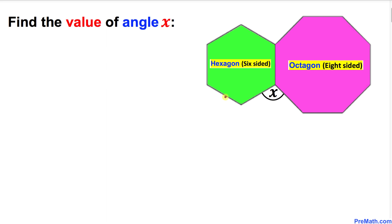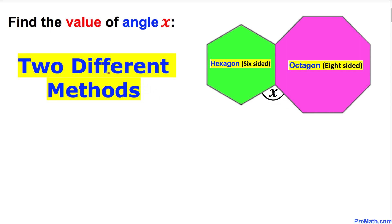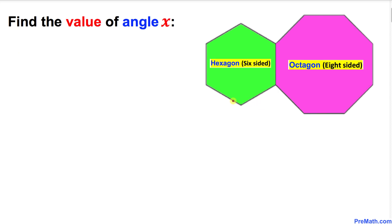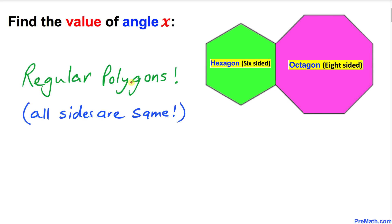Welcome to pre-math. In this video tutorial we have got two polygons — one of them is a hexagon, the other one is an octagon — and we are going to calculate the angle x between these two polygons. I am going to share two different methods for finding the value of this angle x. Let's get started with our solution, and keep in mind that we are dealing with regular polygons, meaning all sides are equal.